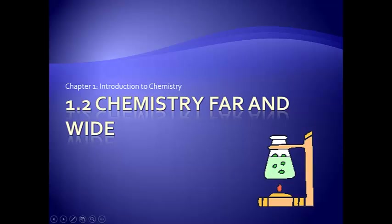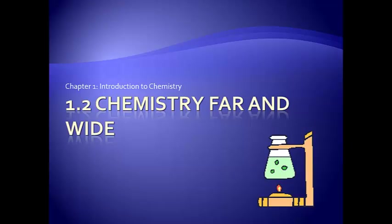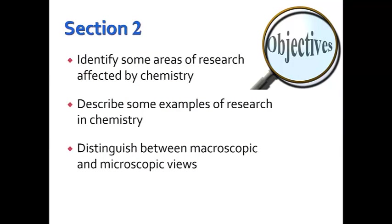Welcome back for our second installment of Chapter 1. This is Section 2. We're going to be talking about chemistry and the applications that it has in the world. Some of our basic objectives are to identify some areas of research affected by chemistry, describe some examples of research in chemistry, and distinguish between macroscopic and microscopic views — and that's actually where we're going to start today.